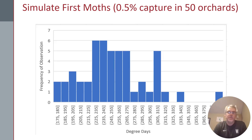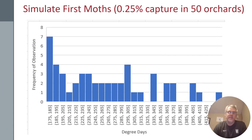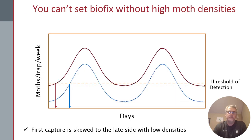When we lower the capture rate even more and continue these simulations, we see even more disjointed distributions where it might be likely that we don't catch our first moth until after 220 degree days, even though they've been there for at least 50 degree days. With a 0.25% capture rate, we can see a very long-tailed distribution where in some simulations the first moth was not captured until after 400 degree days, even though they emerged at 175 degree days. The point is, you can't set a biofix without high moth densities. Even the Alan Knight paper showed that second generation curves matched the model without a biofix. Especially in the first generation, it can be very difficult to capture moths effectively, and using a biofix may throw off your management.